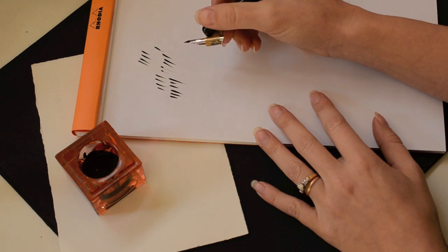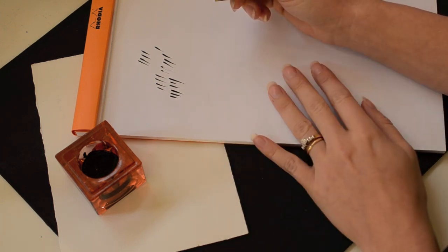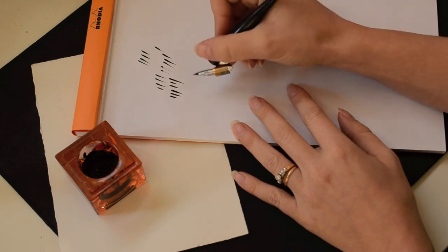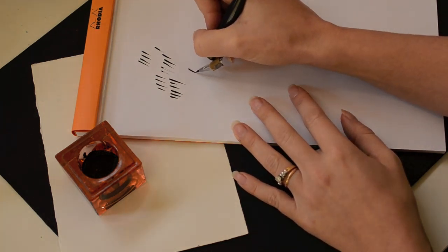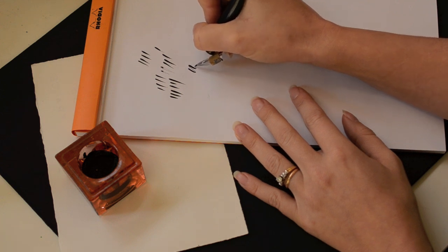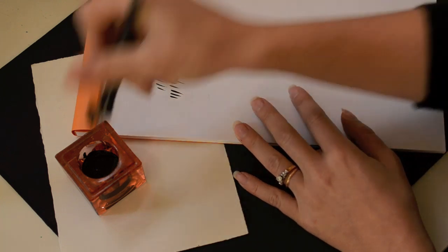So then I usually start with some practice strokes to get it warmed up and to get it flexible, because like the pen holder, the nibs can be tight as well when they're brand new. So I just go down and up and down and up, and this is a really good exercise as well for practicing your pressure and release.